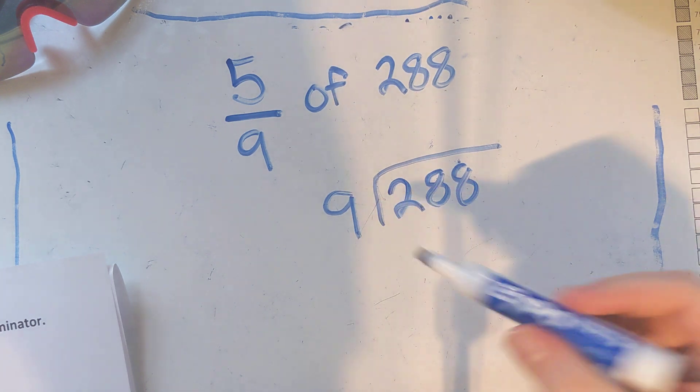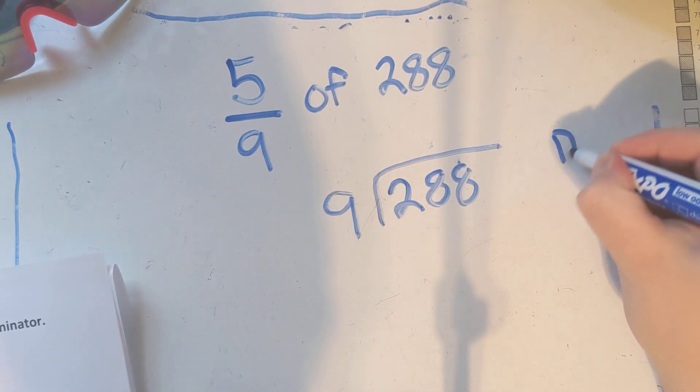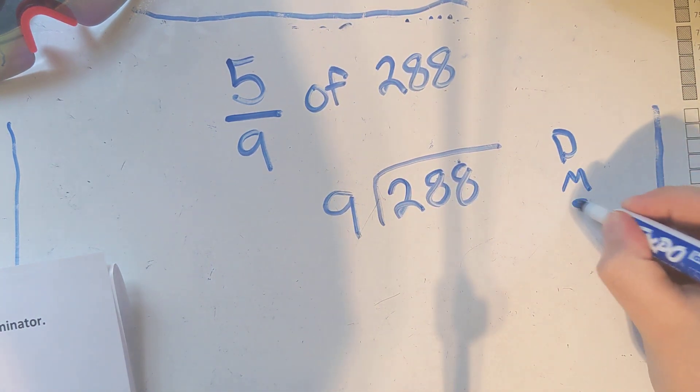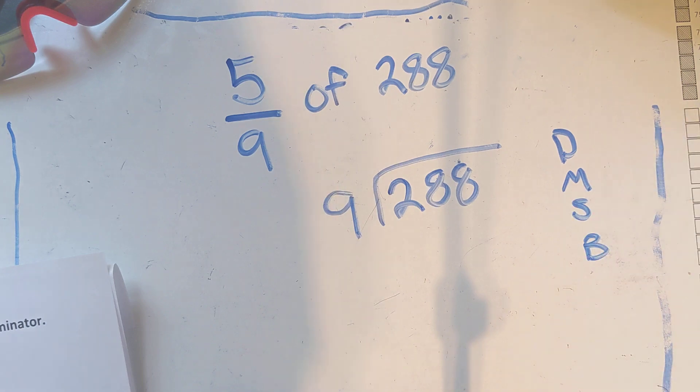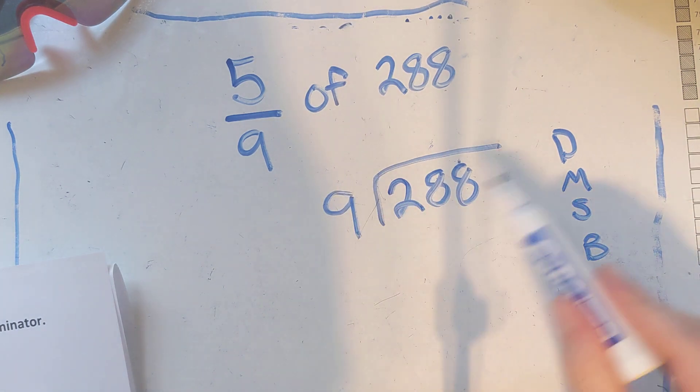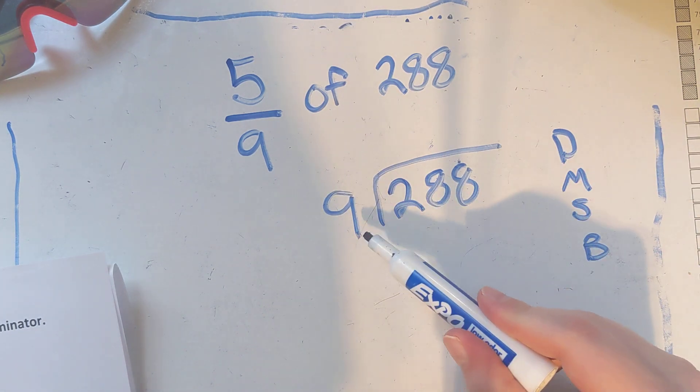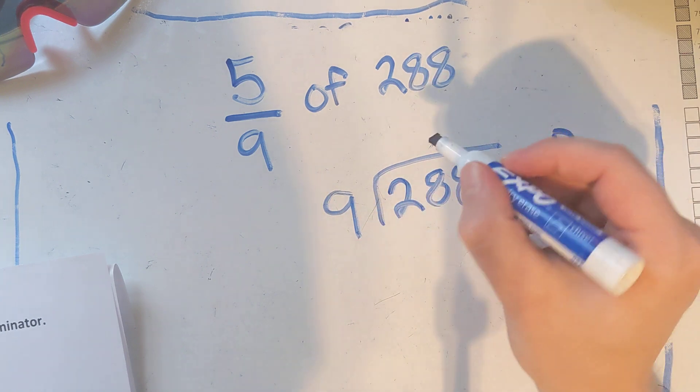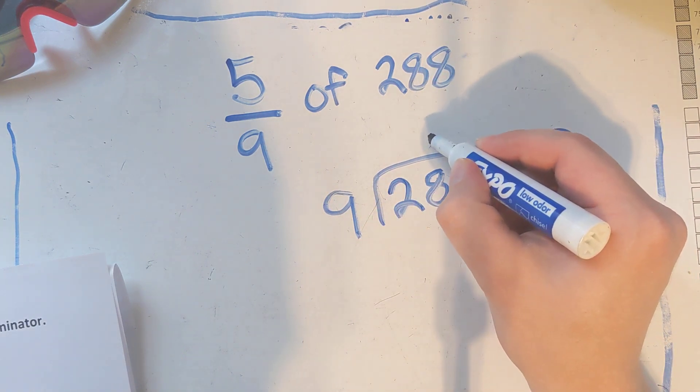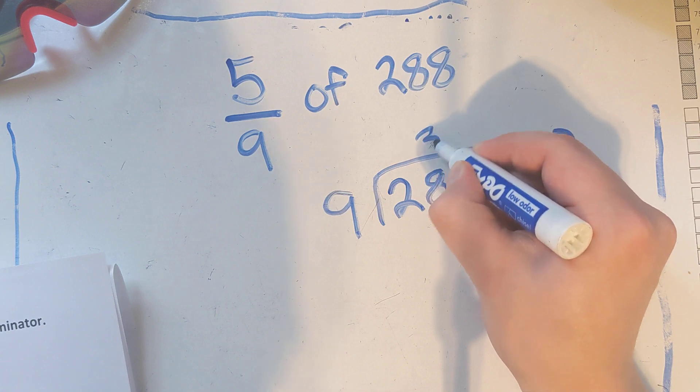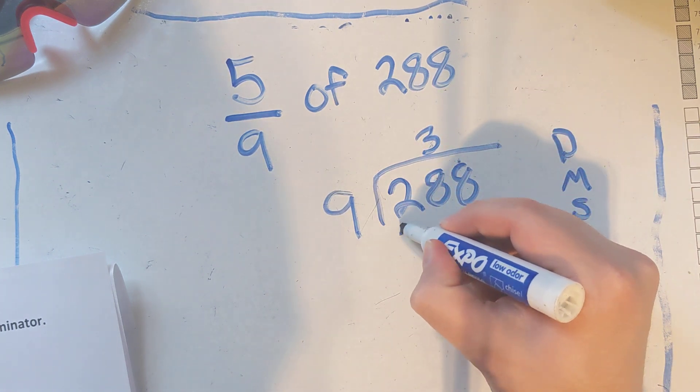Okay, so remember DMSB for our division. All right, now I want to divide 28 divided by 9. Nine goes into there three times, which is 27.